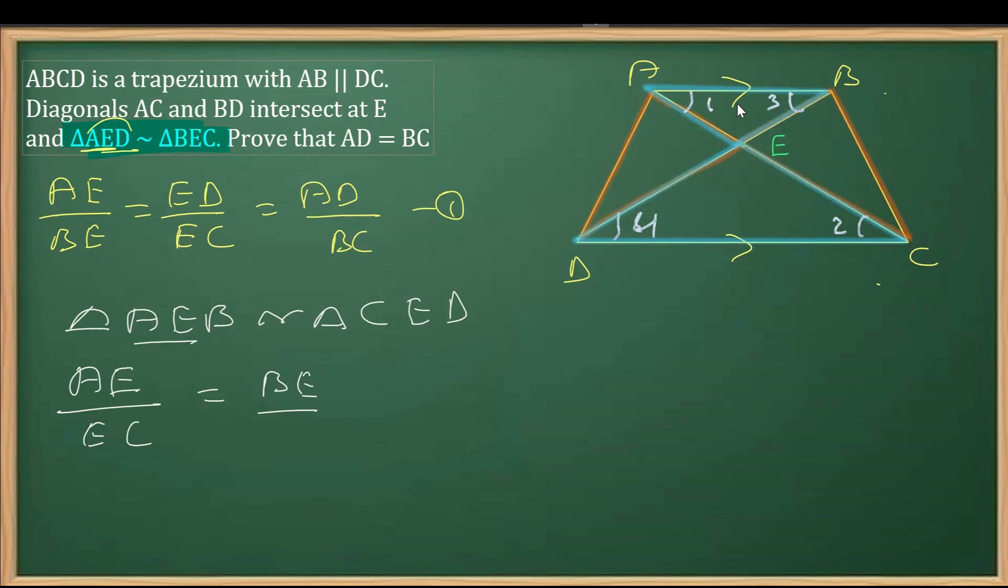Now what I'm going to do is obtain something useful from these equations, which is possible if we do alternando, also known as cross multiplication. By rearranging this, I'm marking equation 3.